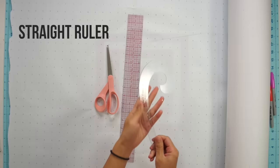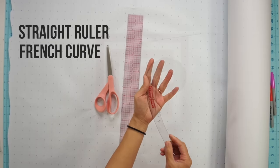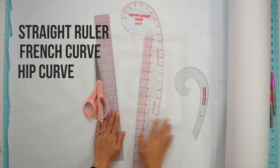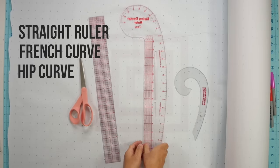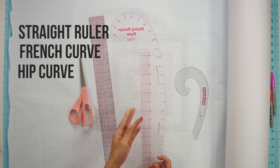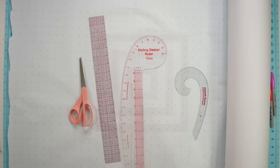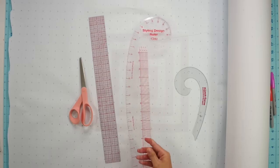It's helpful if they're clear so you can see the paper through them. I have my straight ruler, my french curve which is great for necklines and armholes, and my hip curve. If you only have the straight ruler that's fine as well. Sometimes I don't even use my other rulers because I forget about them, but they do speed up the process and are very handy for tracing curves.